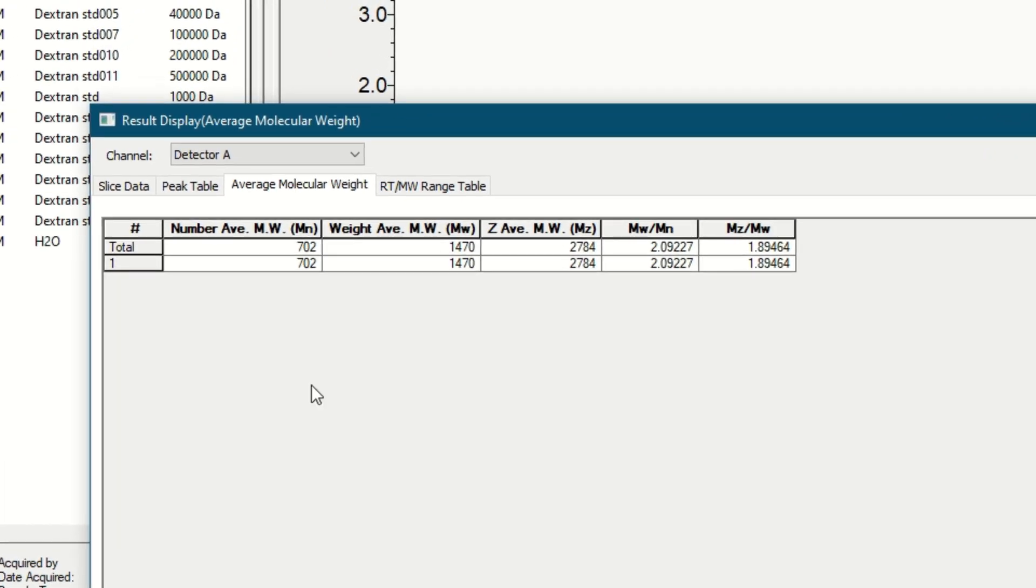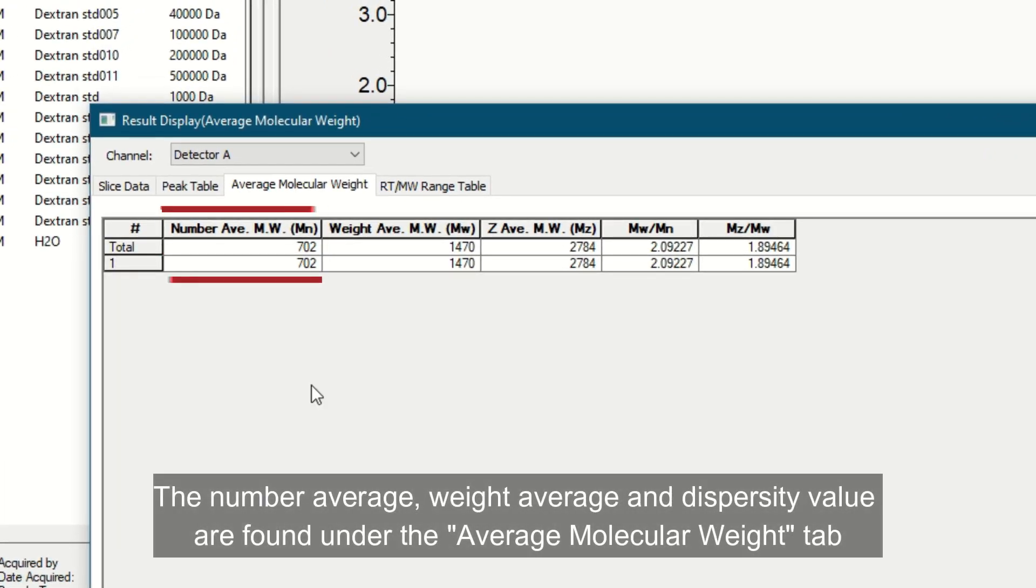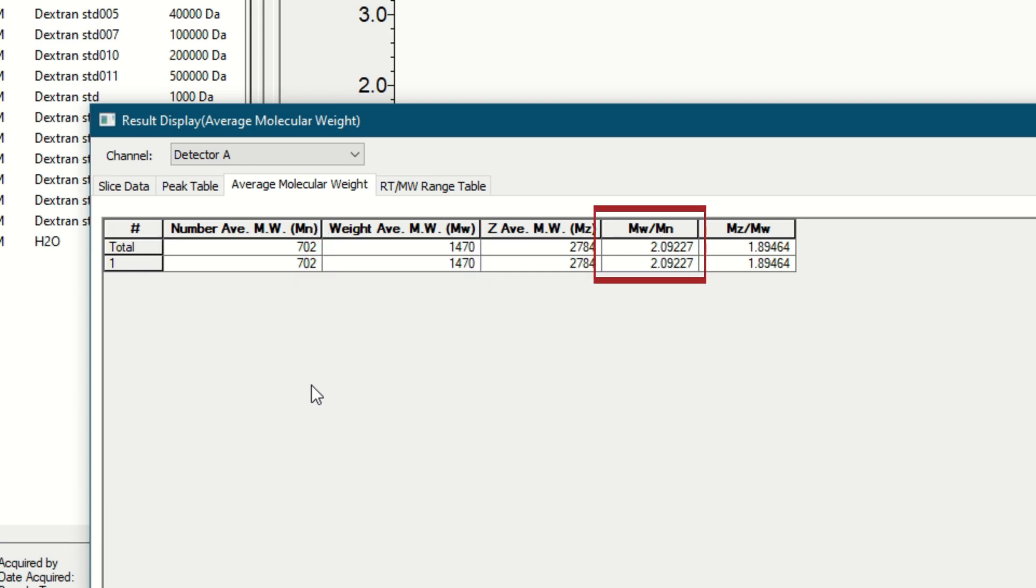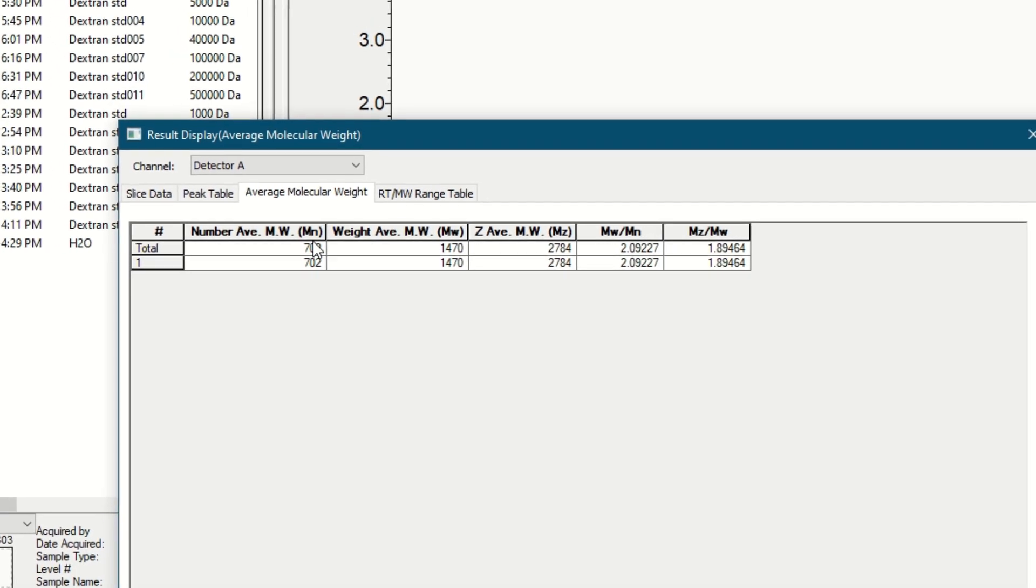Under the average molecular weight tab, the number average, weight average, as well as the dispersity value can be found. The closer the dispersity value is to 1, the narrower the molecular weight distribution. This brings us to the end of the video on how to determine the molecular weight of polymers using the Shimadzu gel permeation chromatography systems.